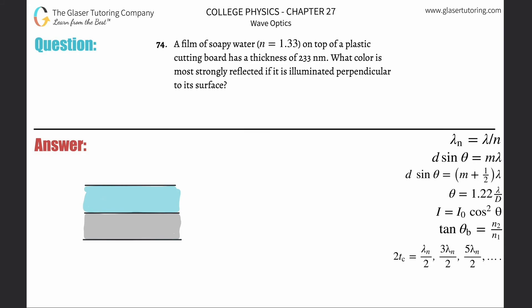Number 74: A film of soapy water with an index of refraction of 1.33 on top of a plastic cutting board has a thickness of 233 nanometers. What color is most strongly reflected if it is illuminated perpendicular to its surface?